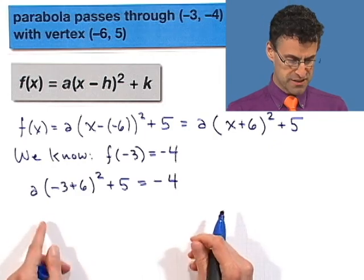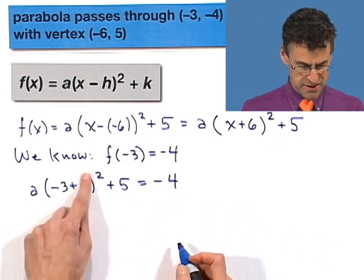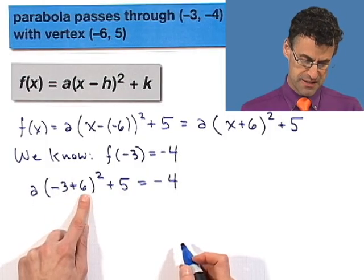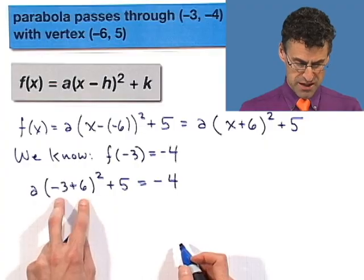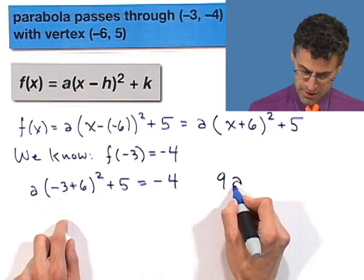Well, now I'm in good shape, because now everything is known except a, so I can actually solve this. Let me just first fix this thing up. That's actually going to be negative 3 plus 6 is just 3, and 3 squared is 9. I'm going to even do it in my head. I'm such a show off. So I've got 9a. Look at me go.